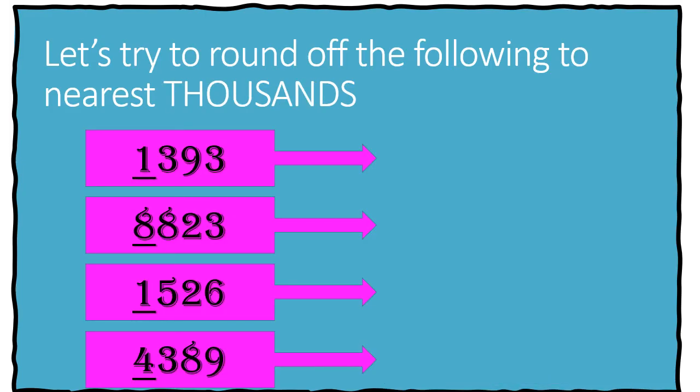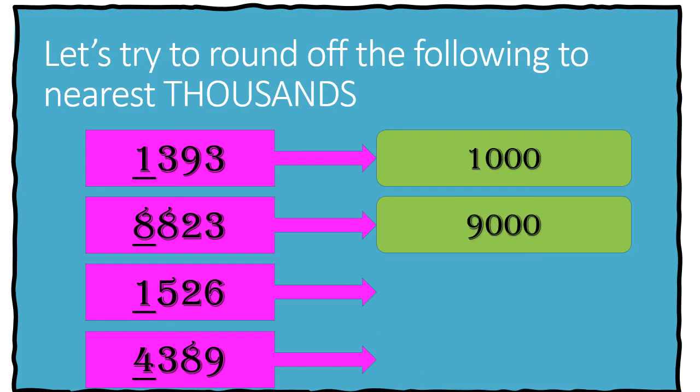This time, let's try to round off the following to the nearest thousands. We have 1,393 rounded off to the nearest thousands will give us 1,000. 8,823 will give us 9,000. If we round off 1,526 to the nearest thousands, it will give us 2,000.